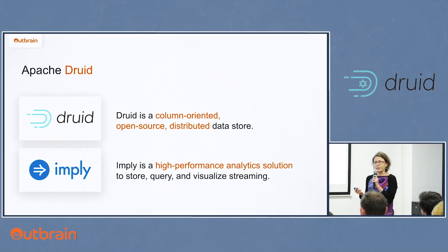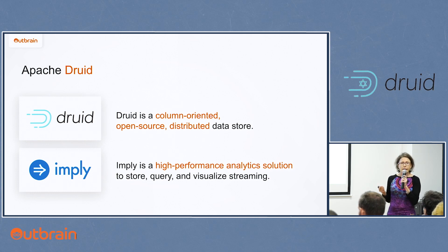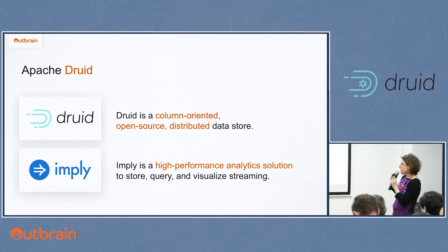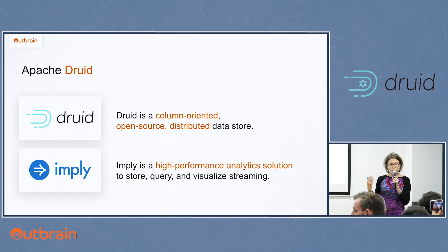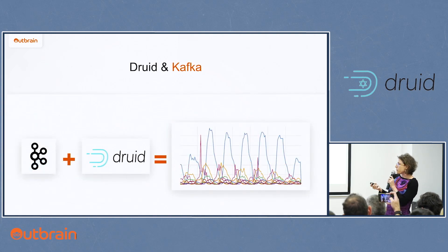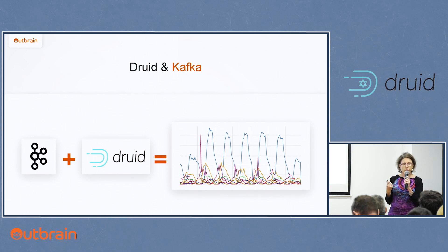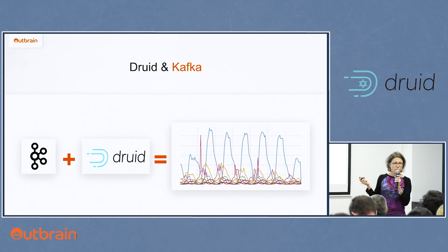What is Druid? Druid is a column-oriented, open-source, distributed data store commonly used for BI and analytics — for analyzing high volumes of streaming and historical data. There is a product called Imply, which is based on Druid and provides high-performance visualization of streaming and historical data. The key word for us is streaming. Imply and Druid have very good integration with Kafka: you specify a Kafka topic and Druid creates a consumer from those events, making the data available for visualization and analytics.